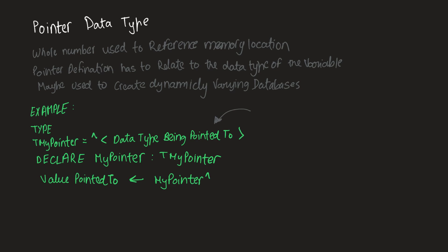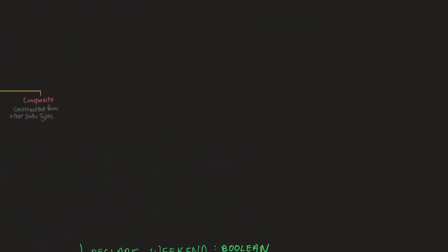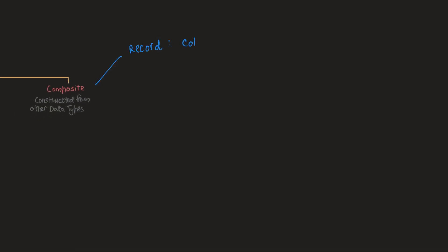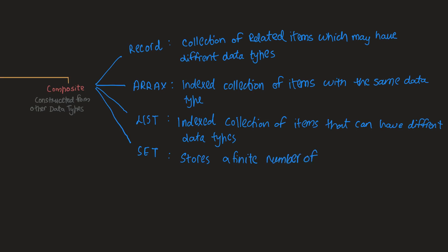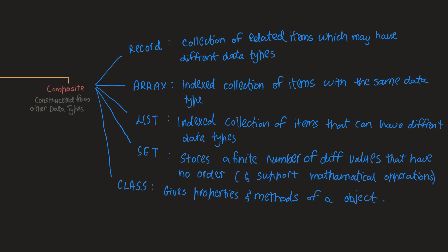Now let's move to composite data types. Now that we are done with non-composite data types, we will now start with composite data types. These are a few data types you might already be aware of from your AS levels, as they are already covered in the syllabus. There are quite a few examples such as stacks, queues, linked lists, and dictionaries, which we will cover later, but that is not part of this chapter. Two new ones which are really important for this chapter are record data types and set data types. Let's do them in detail.